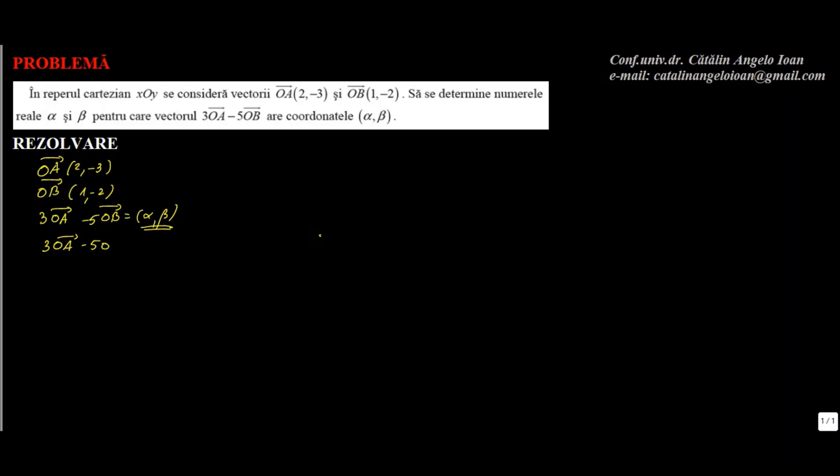Deci avem 3 ori perechea (2, -3) minus 5 ori perechea (1, -2). Cum înmulțim un scalar cu o pereche? Cu fiecare element. Deci egal cu 3 ori 2 este 6, 3 ori minus 3 este minus 9, minus 5 ori fiecare: 5 ori 1 este 5, 5 ori minus 2 este minus 10. Cum se scade o astfel de pereche? Primul minus primul, al doilea minus al doilea: 6 minus 5 și minus 9 minus minus 10 plus 10.